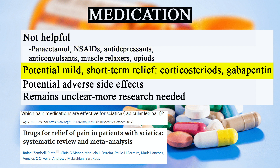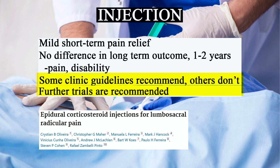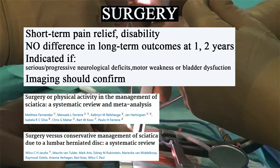Other studies have shown a small and short-term effect for corticosteroids and drugs like gabapentin; however, this remains unclear in the primary care setting and future research is needed. For injections, a study by Olivera et al. in 2020 showed short-term pain relief but no difference in pain or disability outcomes at one and two year follow-up. Some guidelines recommend injections and others don't, so it appears they may be suitable for some cases and not others. Lastly for surgical interventions, two systematic reviews by Fernandez et al. in 2015 and Jacobs et al. in 2011 showed short-term pain reduction and improvement in disability versus controls; however, there was no difference in pain or function at one to two year follow-ups. Most clinical guidelines do support surgery for severe cases, cases that have not responded to conservative care over 6 to 12 weeks, and any medical red flags.